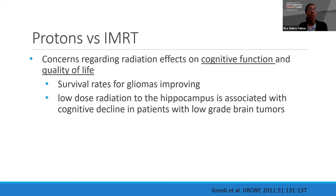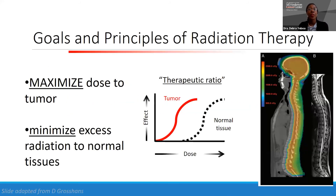Still, as glioma patients' survival improves, and given that low-dose radiation to structures like the hippocampi can have an impact, we want to see what we can do to improve that. The goals of radiation therapy are to maximize dose to the tumor while minimizing radiation to normal structures, improving what we call the therapeutic ratio. The classic example where proton therapy provides a huge benefit is cranial spinal radiation, where protons — particle radiation therapy — deposit maximum dose at a certain point and spare anterior normal structures.